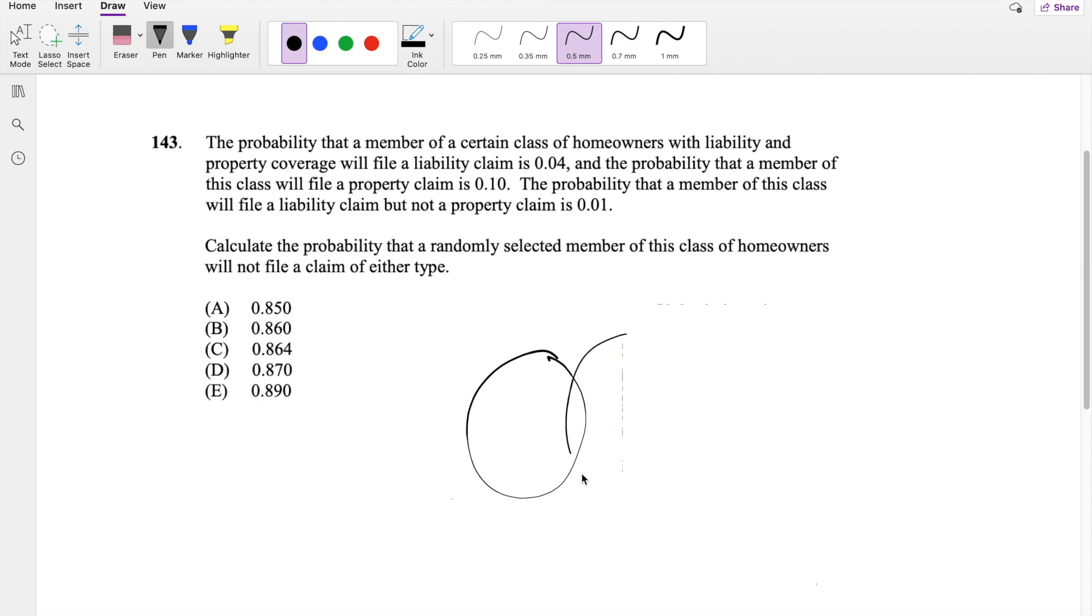So they're saying there are two types of claims a person can file, a liability claim and a property claim. And the probability that they file a liability is 0.04, but that includes this whole thing, right?